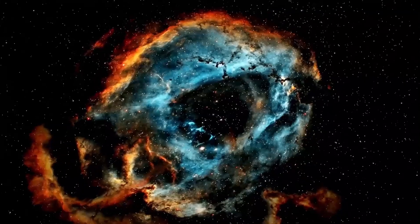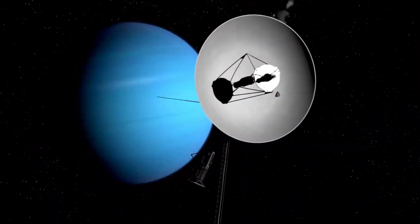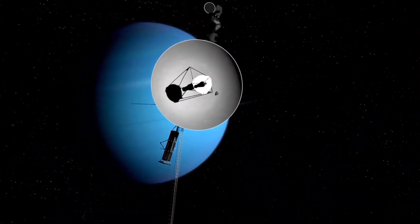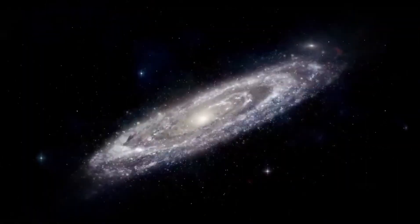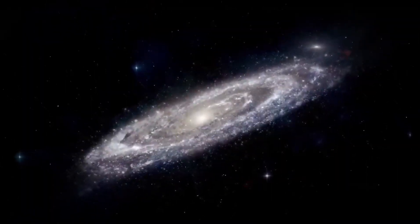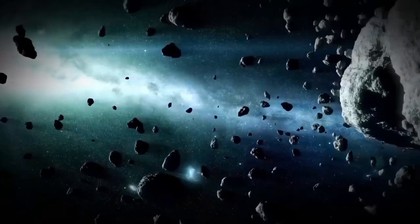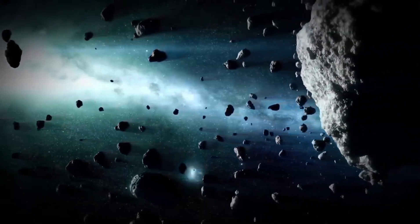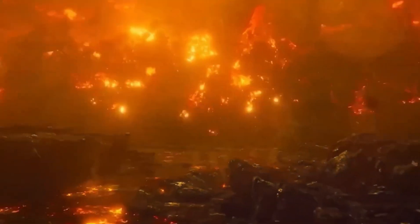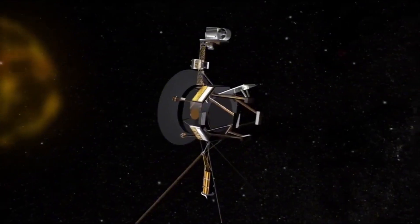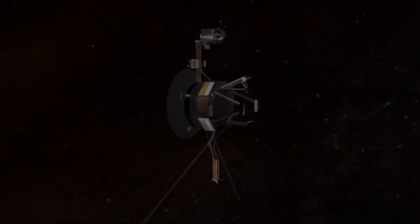On March 5, 1979, Voyager 1 made its closest approach to Jupiter at about 174,000 miles. Subsequently, it passed by several of Jupiter's moons, including Amalthea, Io, Europa, Ganymede, and Callisto, in that order, sending back stunning images of their landscapes and revealing entirely new worlds to planetary scientists.